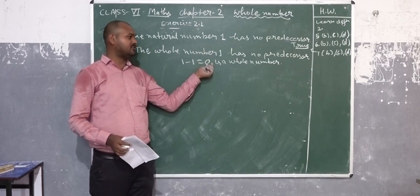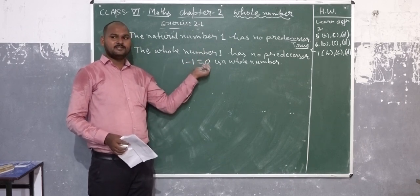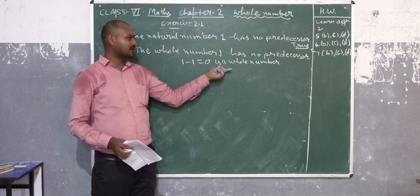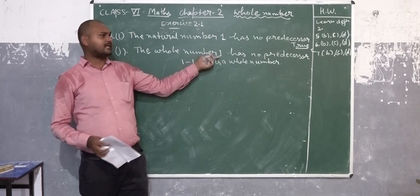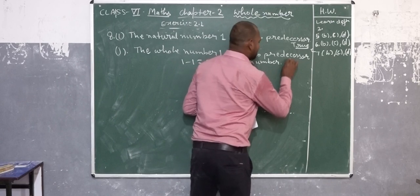But here we find one zero. The predecessor of one is zero, and zero is a whole number. Here we find yes and here we know. Both are negative, so the statement is false.